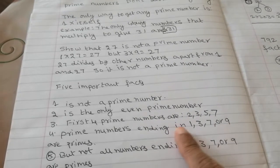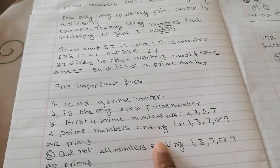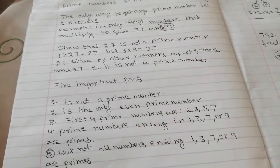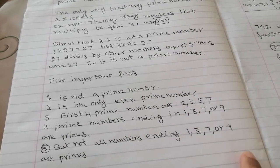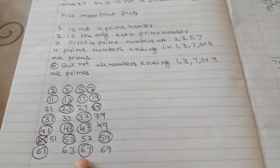First 4 prime numbers are 2, 3, 5, 7. Prime numbers ending 1, 3, 7 or 9 are primes. But not all numbers ending 1, 3, 7 or 9 are primes. And you can see here prime numbers.